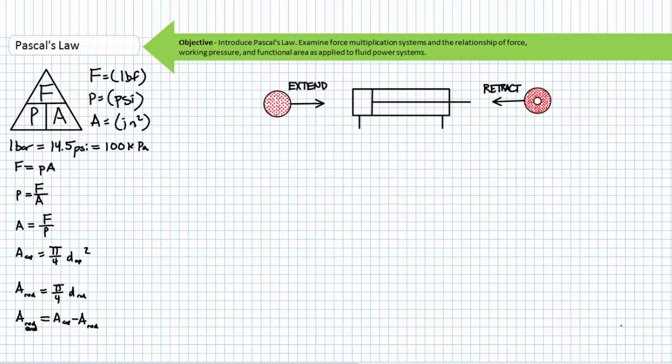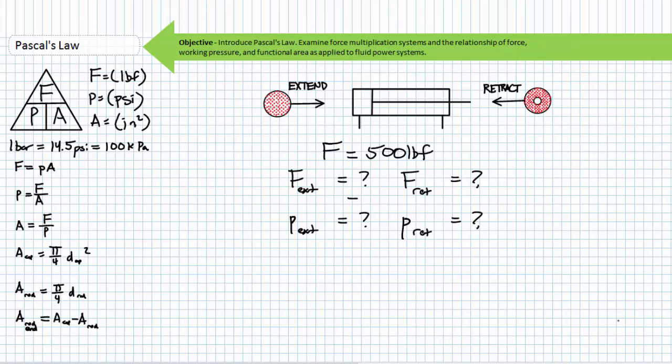Consider a double-acting cylinder with a cap end and a rod end. Notice the difference between the functional area afforded by these two surfaces. The cap end is a full circle. The rod end is a circle with a circular portion removed from the center. Which act requires more force — extending with 500 pounds or retracting with 500 pounds? The answer is neither. Both acts exert 500 pounds of force. This is similar to the question: which weighs more, a pound of feathers or a pound of lead? Neither, since they both weigh a pound.